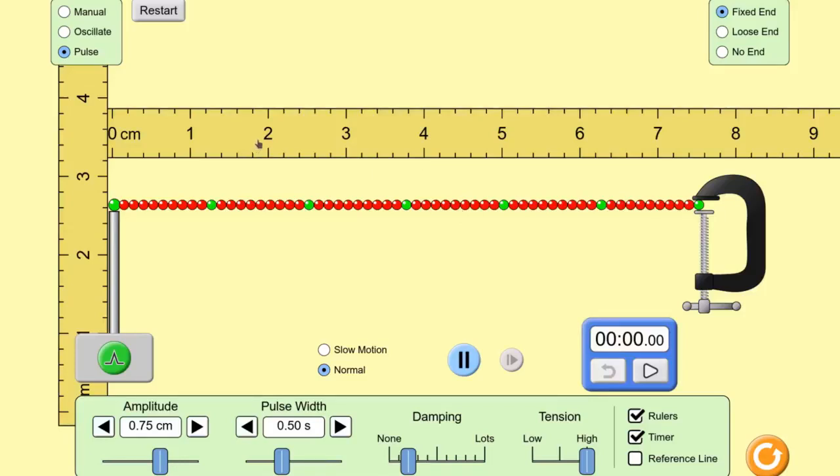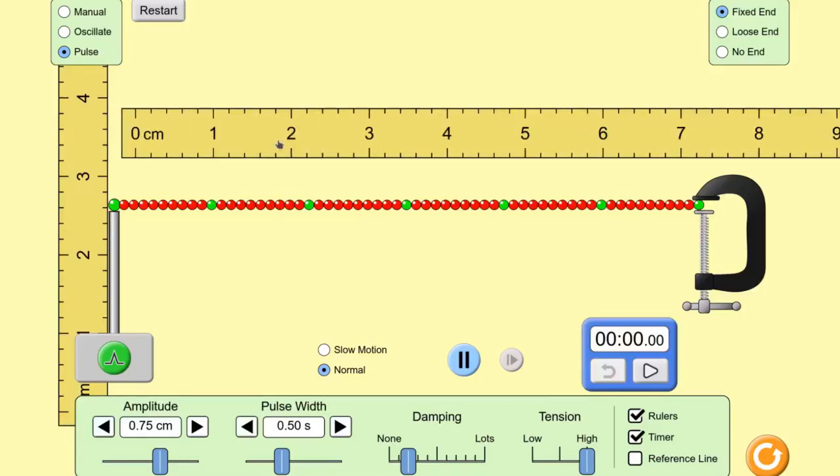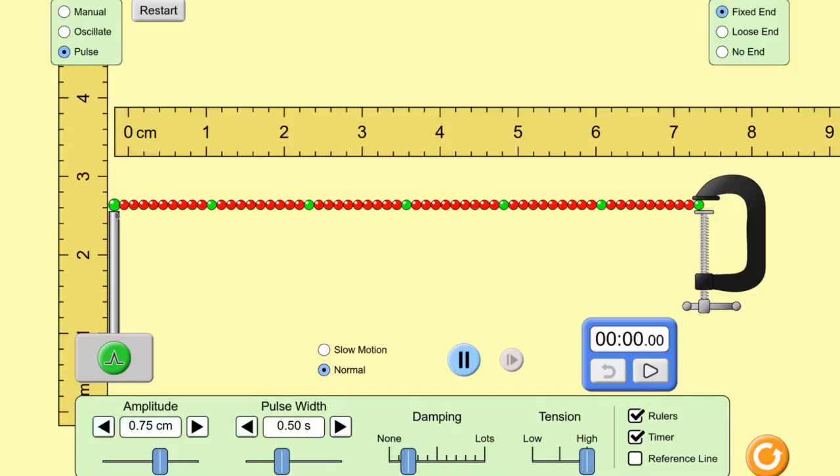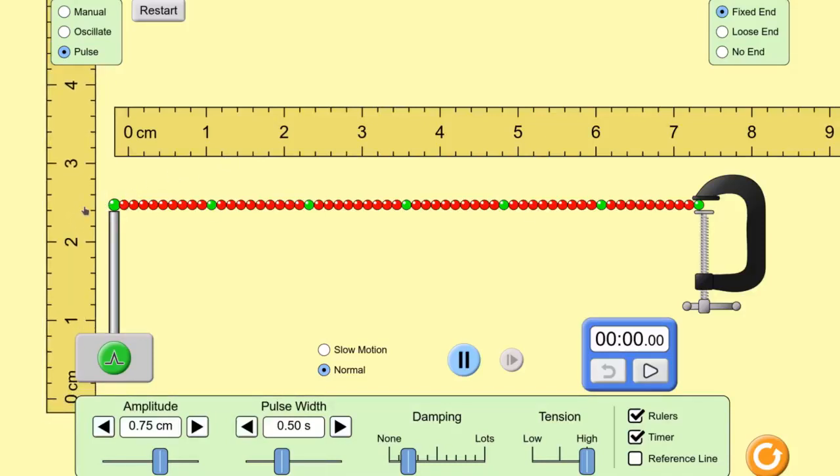With the rulers, which you can move around, you can measure the length of the string and you can also, with the vertical ruler, measure the amplitude of any waves.